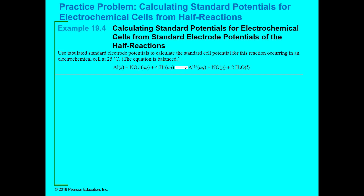We're using tabulated standard electrode potentials to calculate the standard cell potential for a reaction in an electrochemical cell at 25°C. Standard conditions means we're at one molar aqueous, one atmosphere if it's a gas, and 25°C — very important to remember. We calculate the E° of the standard cell potential using the standard potentials of the half reactions.